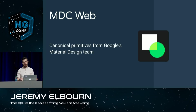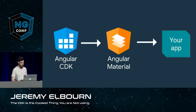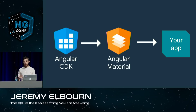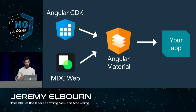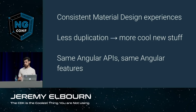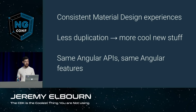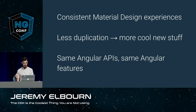MDC Web is an open source library created by the Material Design team at Google. It provides a set of primitives — CSS and JavaScript assets — that can be used to compose material design components. We've been collaborating with the material design team over the last several months to find out how we can take both of our efforts and work together more closely. Going forward, Angular CDK will provide behaviors while MDC Web provides building blocks that will go into composing components into Angular Material. This will give us a more consistent material design experience, and the material design team can focus on CSS details and bezier curves while the Angular team focuses on cool new Angular features.